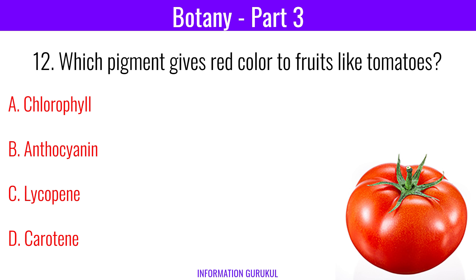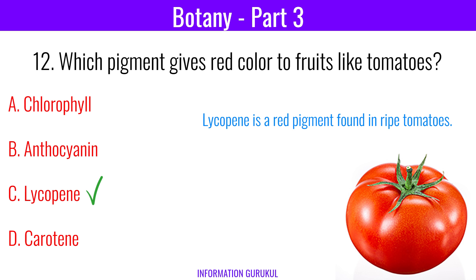Which pigment gives red color to fruits like tomatoes? Lycopene. Lycopene is a red pigment found in ripe tomatoes.